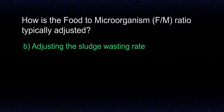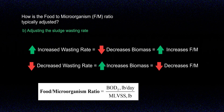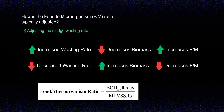The answer is B, adjusting the sludge wasting rate. The food to microorganism ratio, also called the food to mass ratio or F/M, represents the amount of BOD or CBOD available relative to the amount of microorganisms in the system. To control this ratio, operators must adjust the sludge wasting rate. When you increase the wasting rate, you remove excess microorganisms, reducing your biomass and increasing the food to mass ratio. On the flip side, decreasing the wasting rate retains and grows more biomass, which lowers the food to mass ratio. You need to track your mixed liquor volatile suspended solids (MLVSS) concentration to know how many microorganisms are in your system.